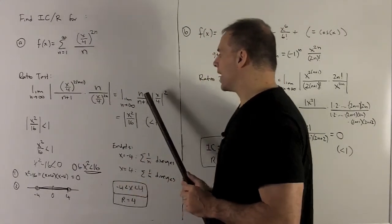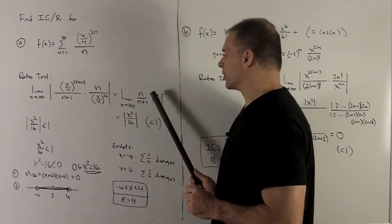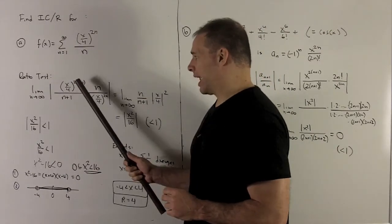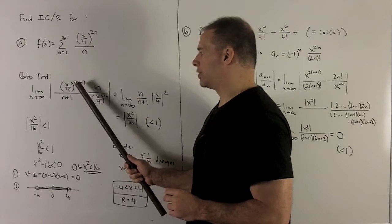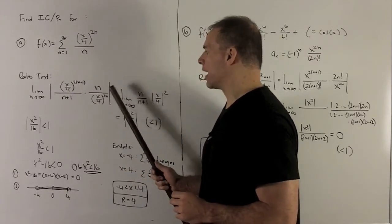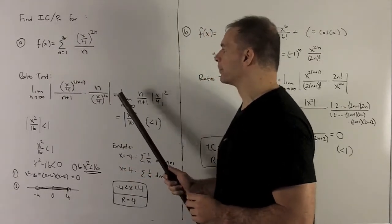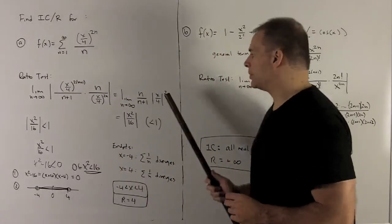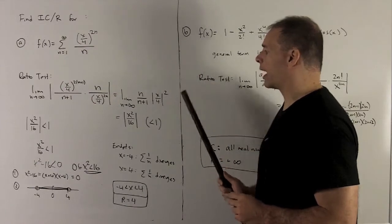So the n over n plus 1 comes out of the absolute value sign. n's always going to be positive in this case. And then what do we have? We have x over 4 raised to the 2n plus 2 power over x over 4 raised to the 2n. Note, when we cancel, we'll just be left with a 2 up on top, so it's going to be x over 4 in absolute value squared.